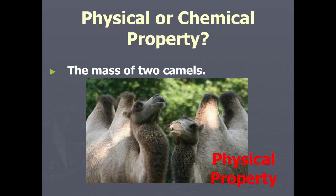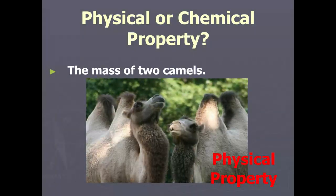If you're looking at the connections between the different answers, basically what you're seeing is: if you can describe that property without changing the identity of the substance, then it's probably physical. But if you can't describe it without changing what you have, it's probably chemical. For instance, flammability — you can't have flammability without changing something into the ash version of itself, which is not the same thing.